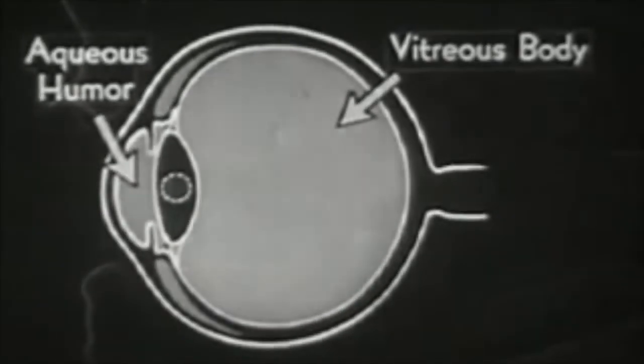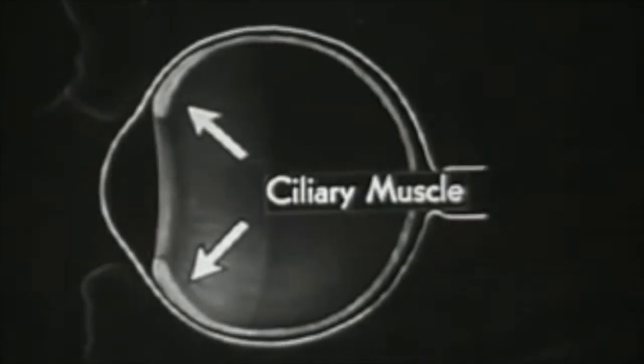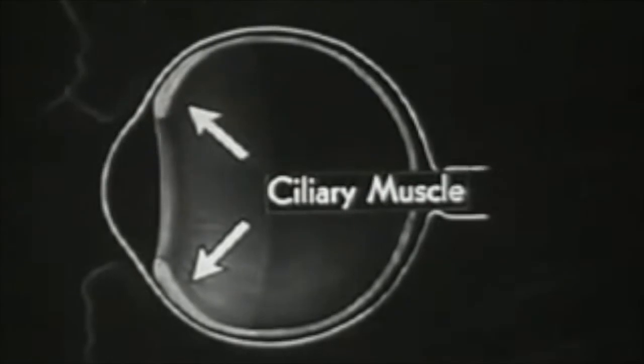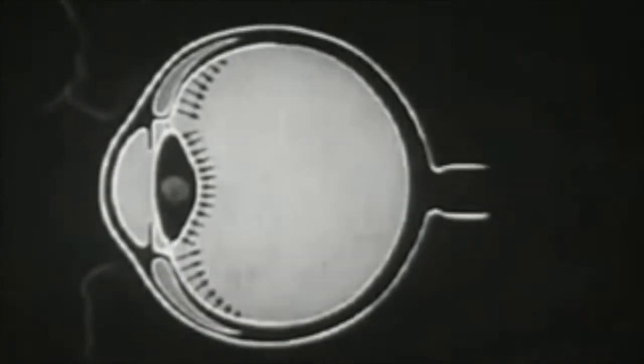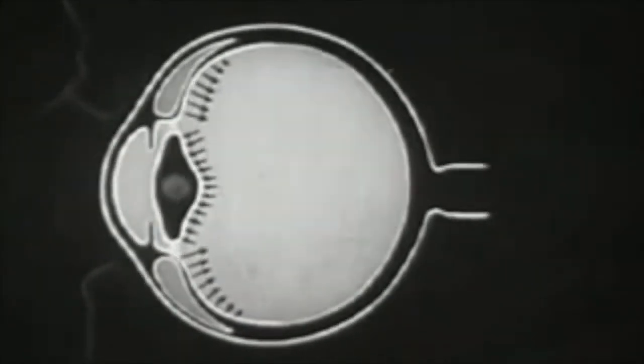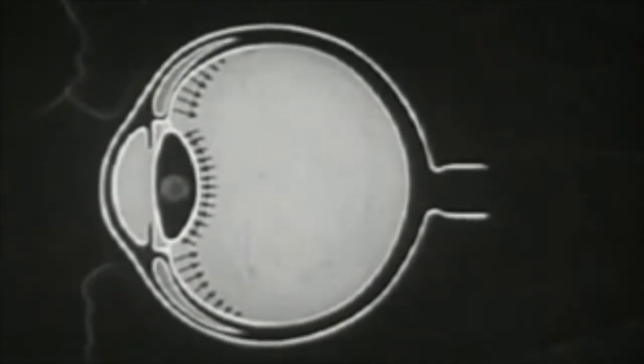In order to explain this, let us again call attention to the important ciliary muscle which we see here in the diagram. This muscle is shaped like a broad ring which can expand and contract. Whenever it does contract, it must press upon the non-elastic vitreous humor. This liquid is confined within the rigid capsule of the eyeball and must therefore exert pressure upon the lens.